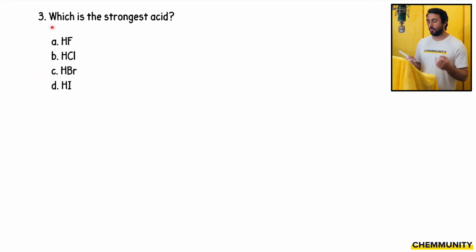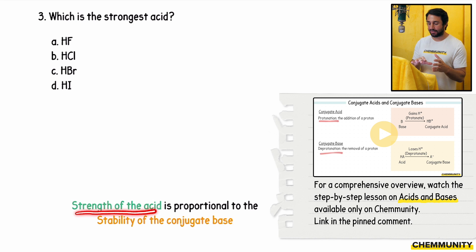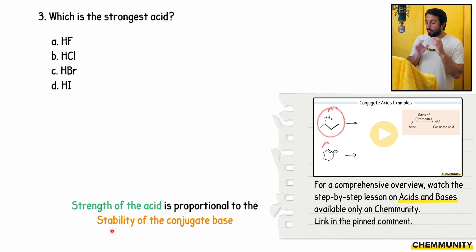Number three asks, which is the strongest acid? When we're talking about acid strength, what we need to understand is that the strength of an acid is proportional to the stability of the conjugate base. What we really mean here is that the more stable the thing is that you get, the more readily the acid wants to donate the proton, meaning the stronger the acid is.